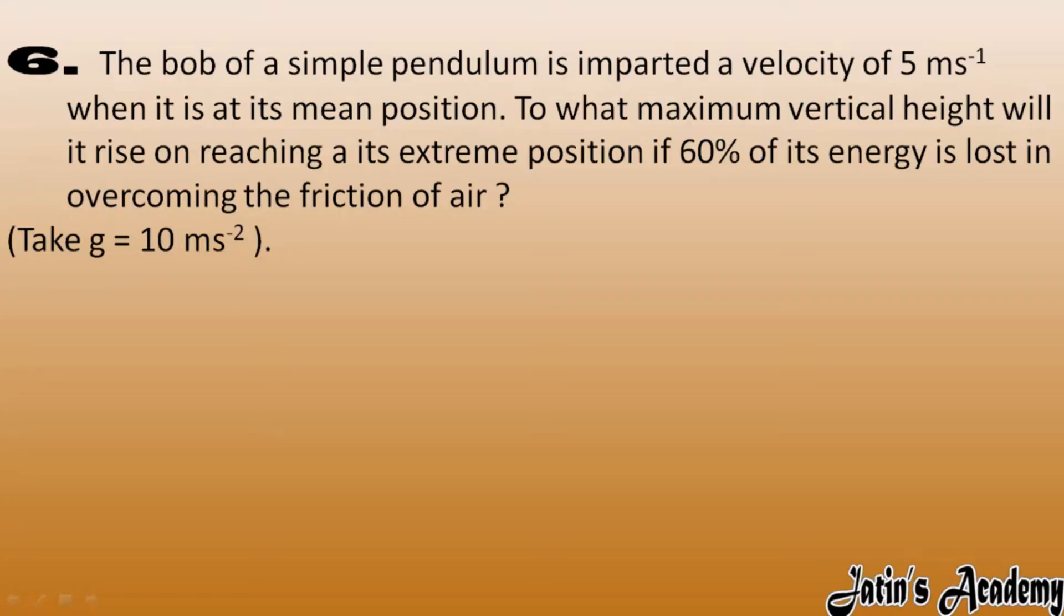The bob of a simple pendulum is imparted a velocity of 5 meter per second when it is at its mean position. To what maximum vertical height will it rise on reaching at its extreme position if 60% of energy is lost in overcoming the friction of air?